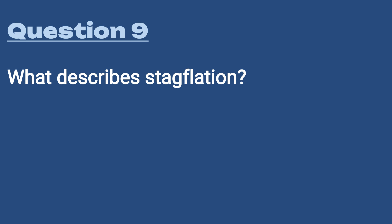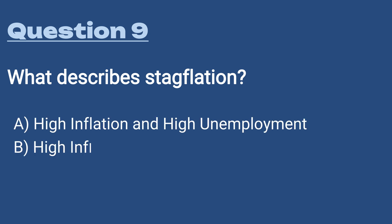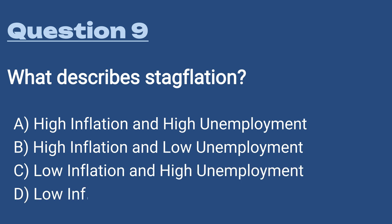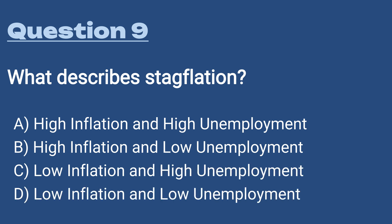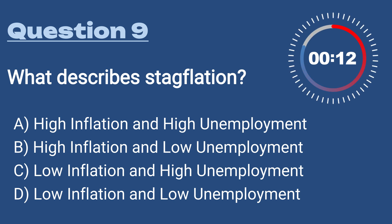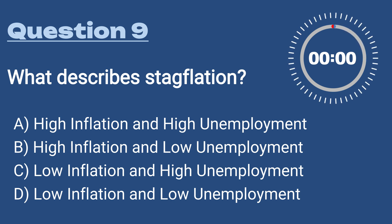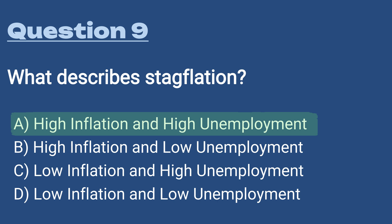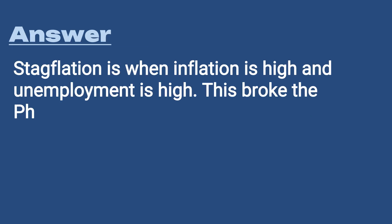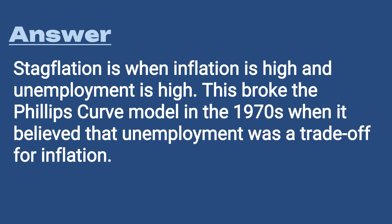Question number nine: what describes stagflation? A) High inflation and high unemployment, B) High inflation and low unemployment, C) Low inflation and high unemployment, D) Low inflation and low unemployment. The answer is A, high inflation and high unemployment. Stagflation broke the Phillips Curve model — in the 1970s it was believed that unemployment and inflation were a trade-off for each other. Stagflation is not the economy you want to live in.